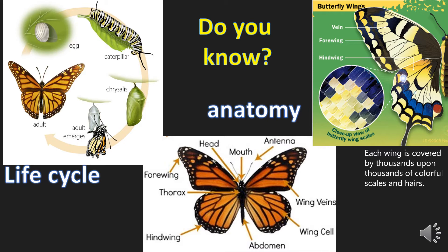There's a middle picture that shows you the parts of the butterfly: the head, the mouth, the antennae, the wing veins, the wing cells, the abdomen, the hind wing, the thorax, and the forewing.